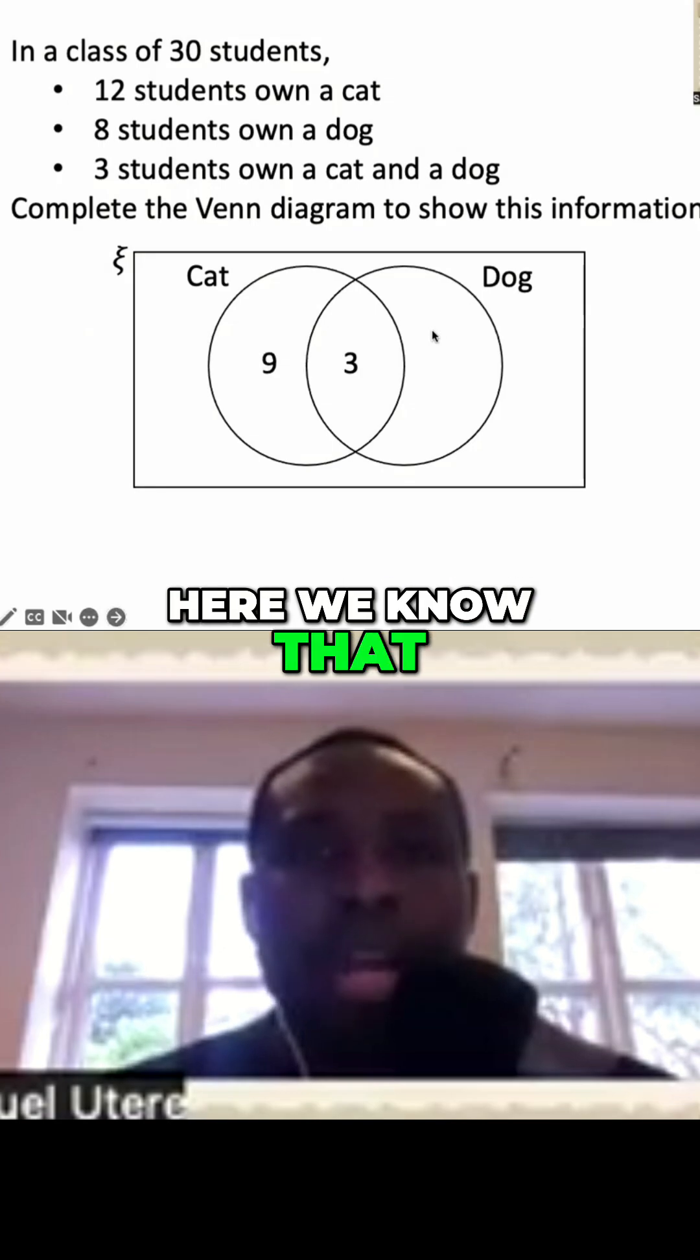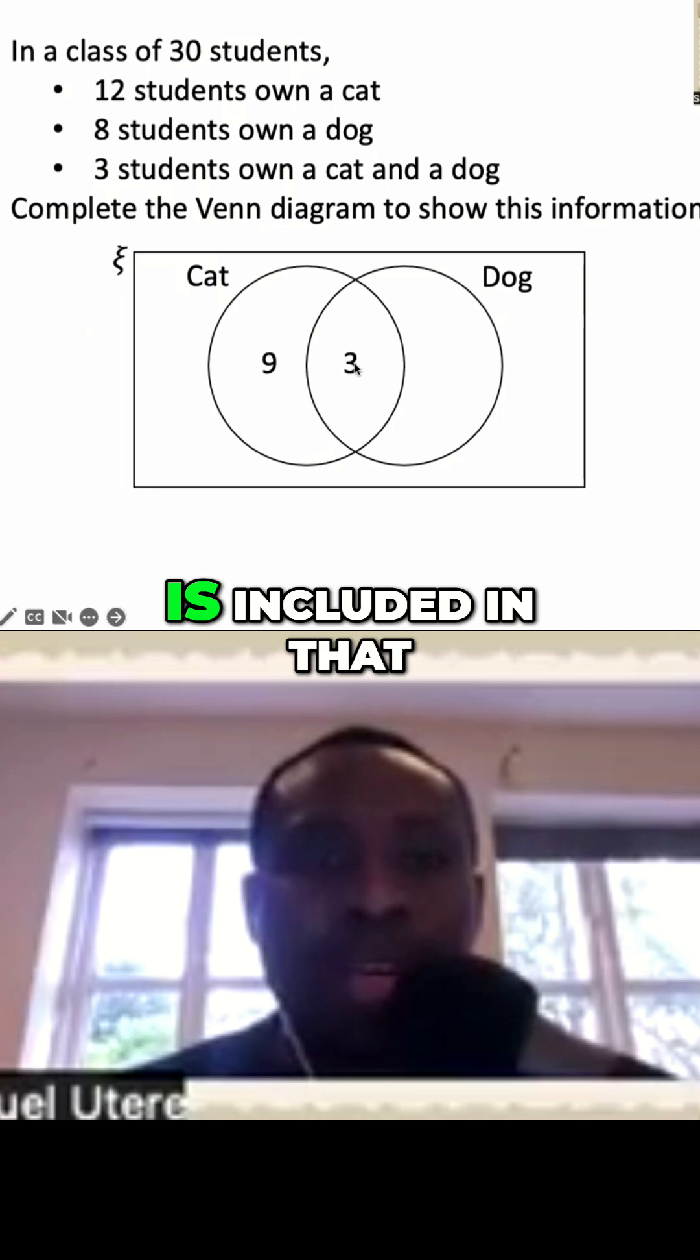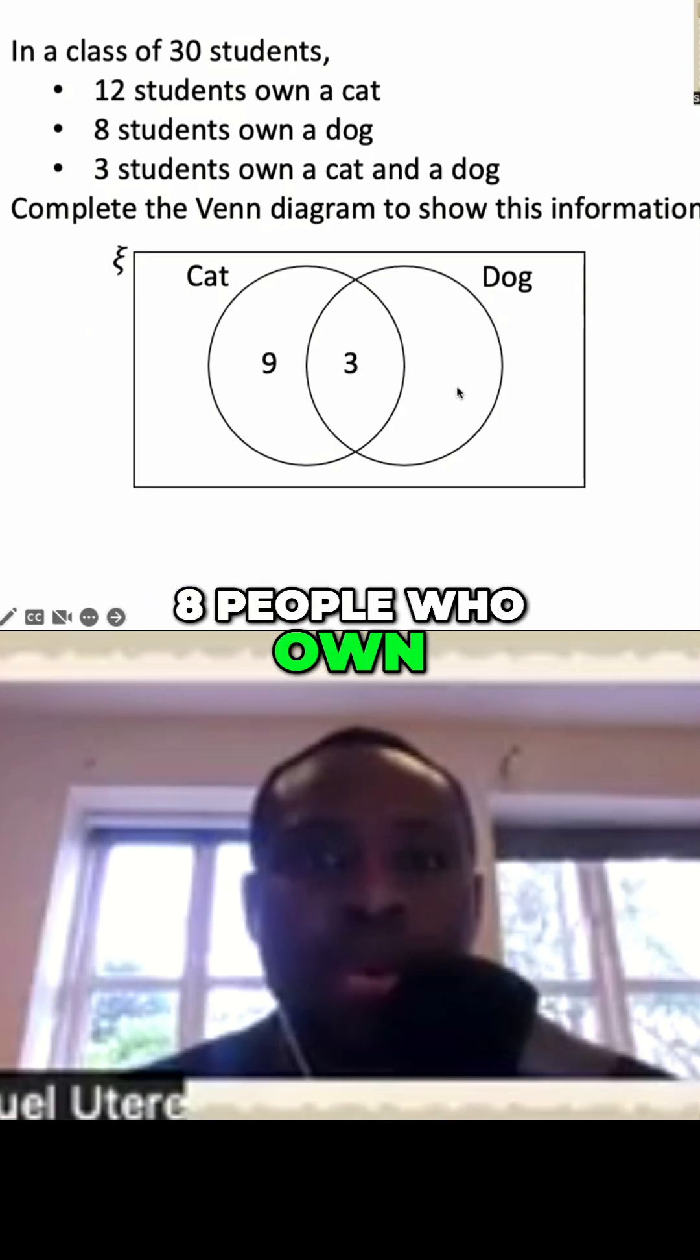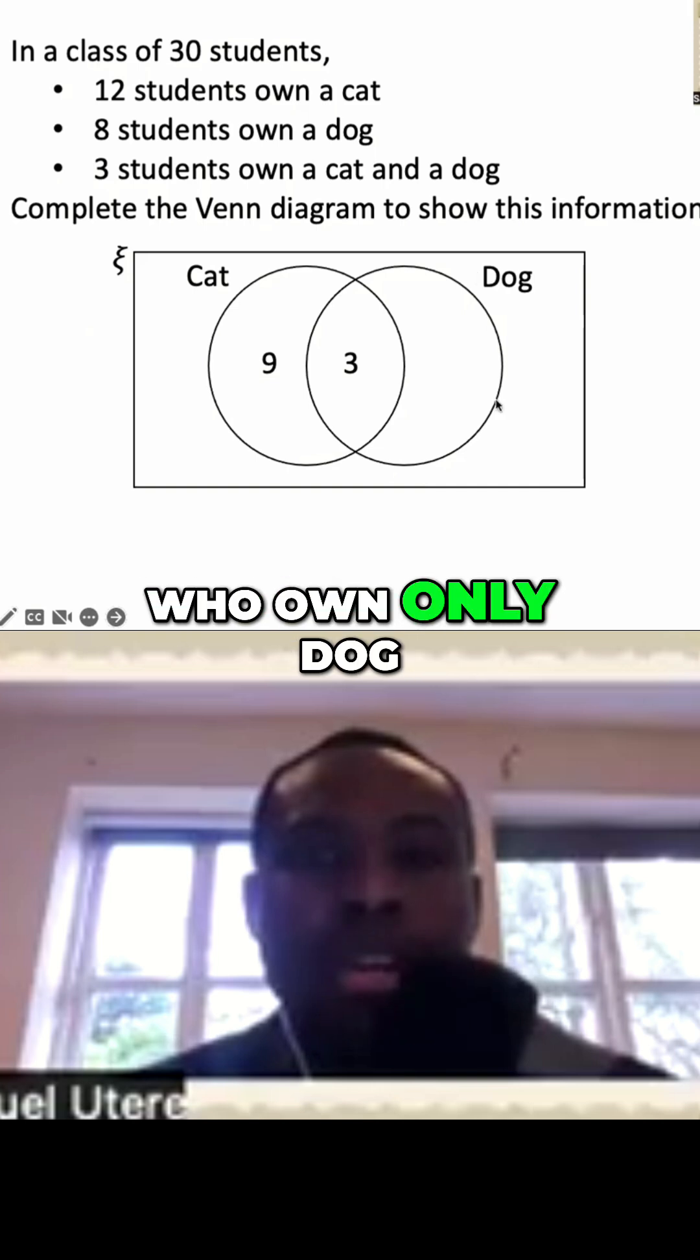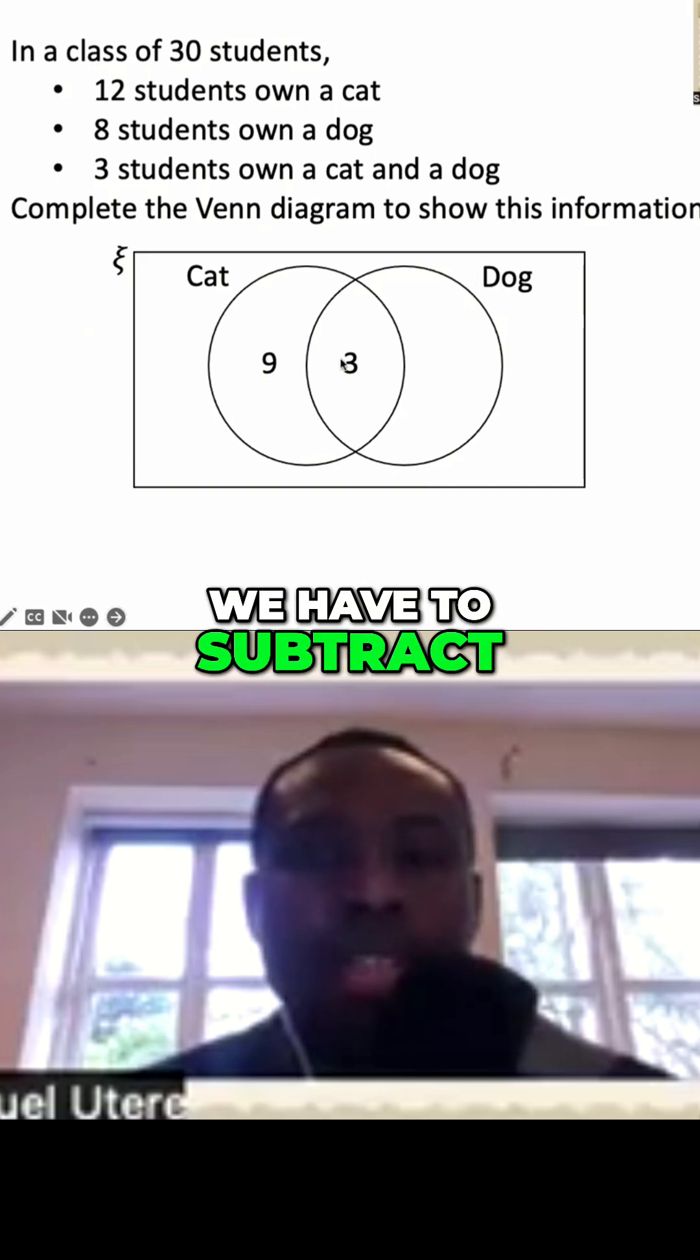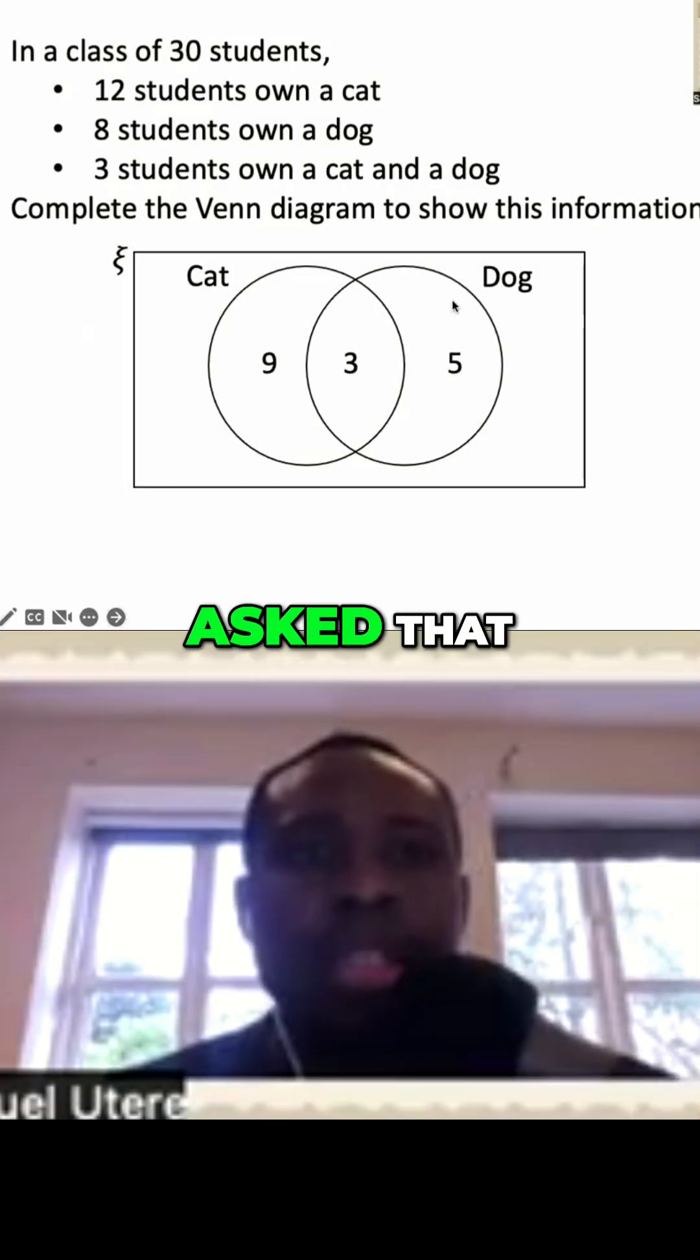Here, we know that eight students own a dog. But remember, this three is included in that eight people who own a dog. So to find the actual number of people who own only dog, we have to subtract three from that eight. So we have five and then we've been asked that.